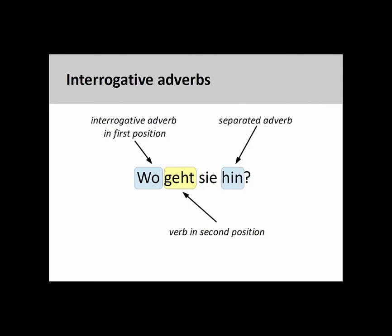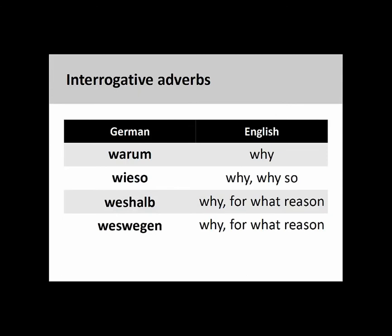It is common colloquial practice to break 'wohin' and 'woher' into two parts, so that the separated adverb — 'hin' or 'her' — comes at the very end of the question. This separation does not change the meaning of the sentence. Finally, there are several different ways of asking what is essentially 'why.' Germans are, apparently, very inquisitive people.